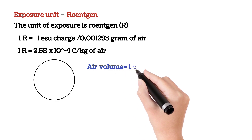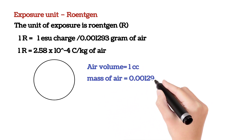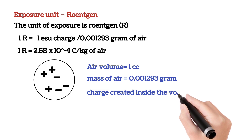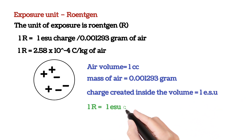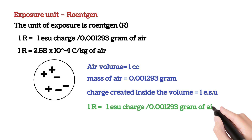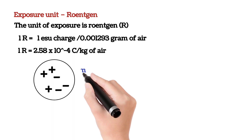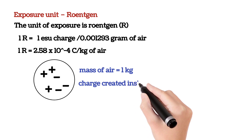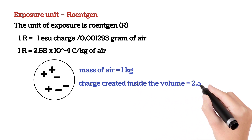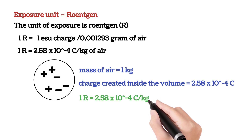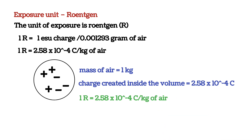If the air volume is 1 cc, having a mass of 0.001293 gram of air, and when radiation interacts with this volume due to ionization, the charge produced inside the volume of air is equal to 1 ESU, which is equal to 1 roentgen. Similarly, if the mass of air is 1 kg and the charge produced is equal to 2.58 × 10⁻⁴ coulombs, that is also equal to 1 roentgen. In this way, we can define the roentgen in both units of charge — ESU and coulomb.